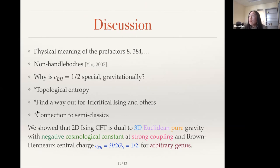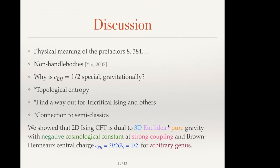I think I don't have much time, so I'll skip the last two points. So the take-home message is that by matching partition functions, we've showed that 2D Ising CFT is dual to 3D Euclidean pure gravity with negative cosmological constant at strong coupling and Brown-Henneaux central charge C equals one half, and this is done for all genus.